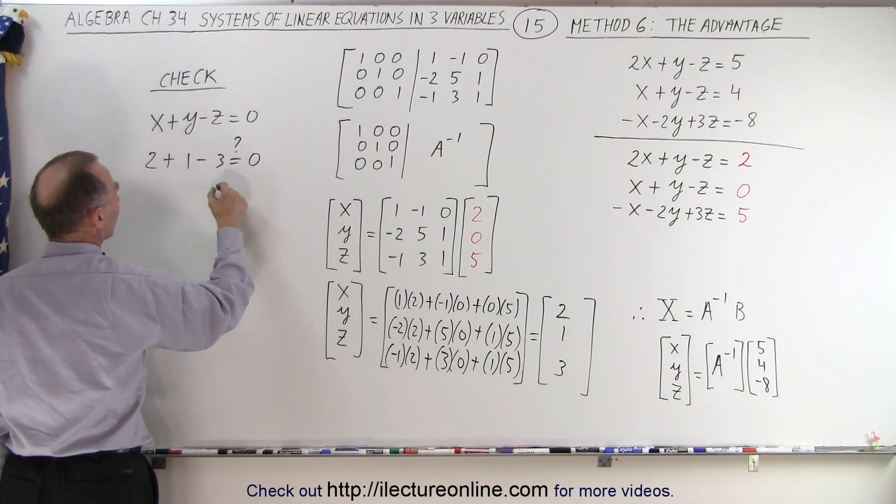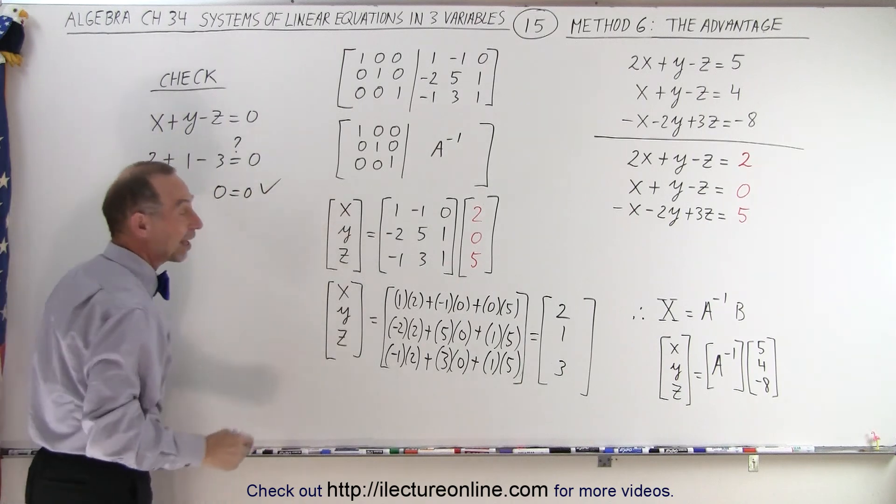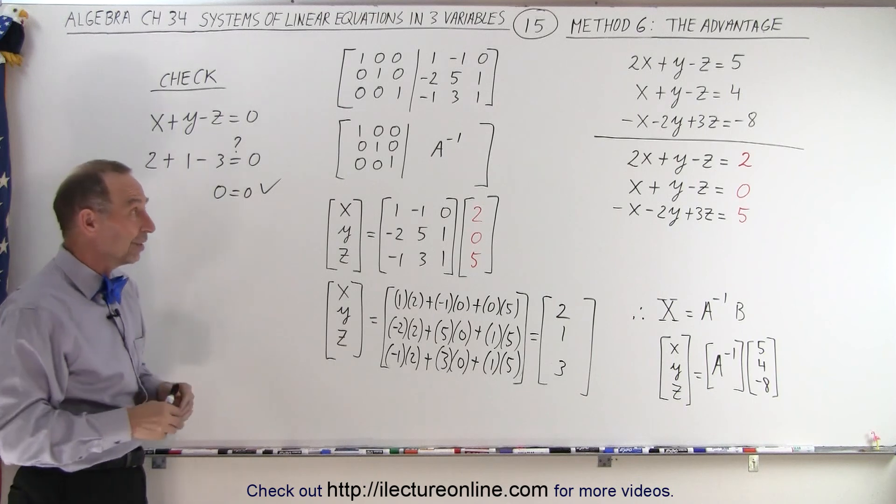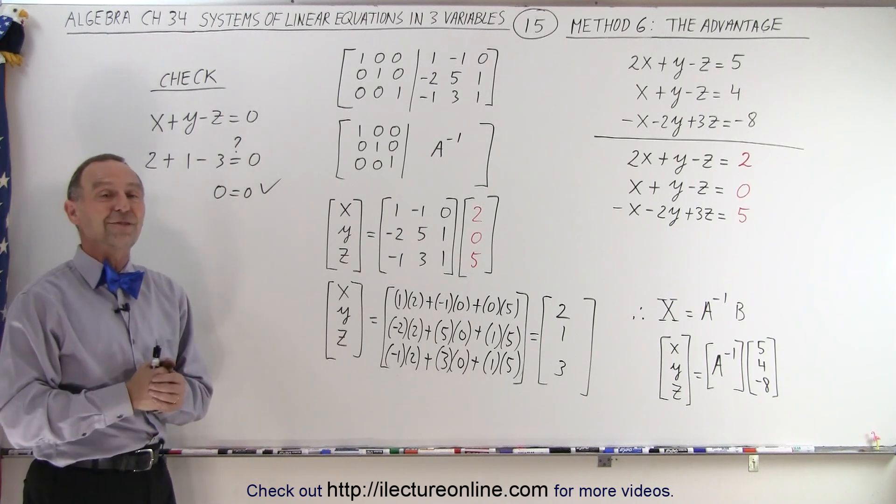And sure enough, 3 minus 3, 0 equals 0. And it looks like we found the 3 correct values for X, Y, and Z.